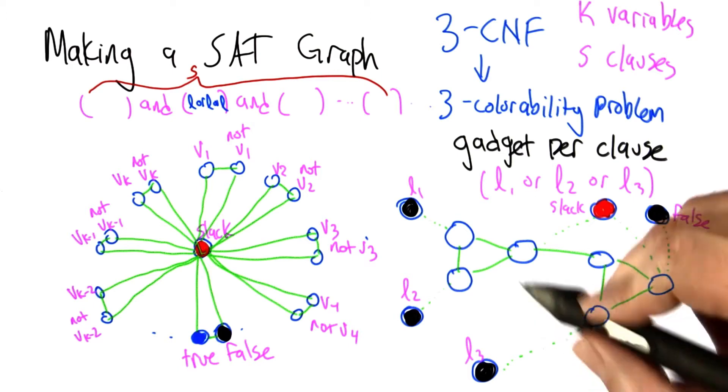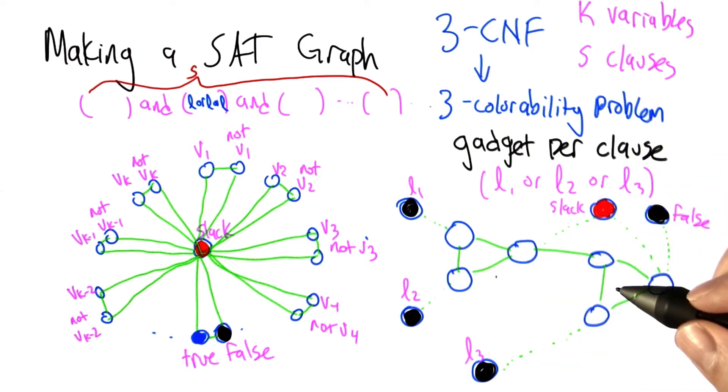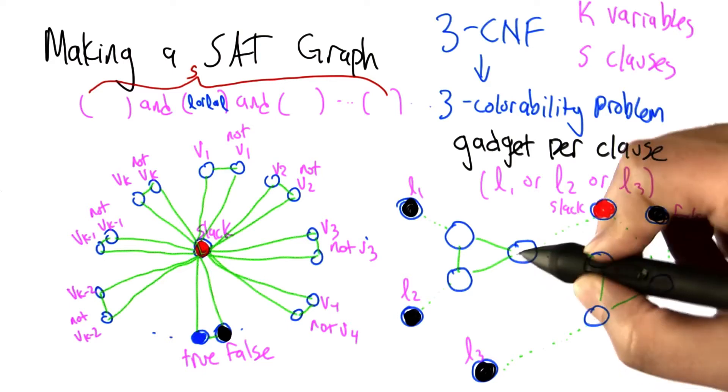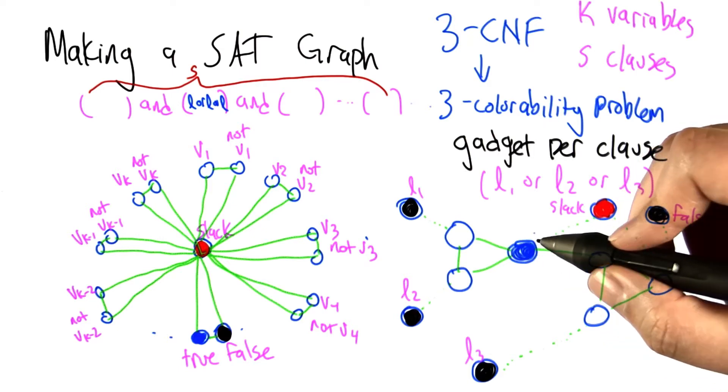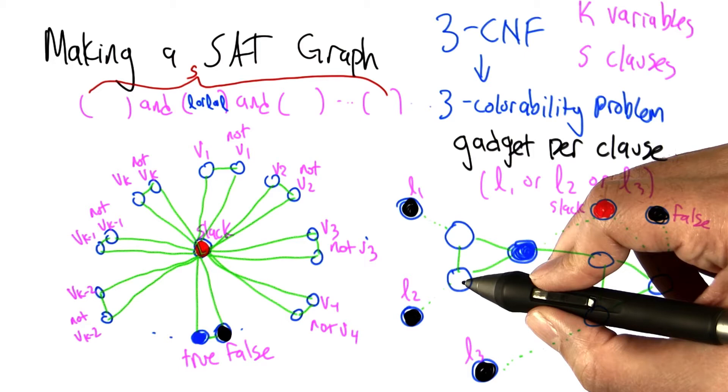So this is going to be important to make sure that this graph is not going to be colorable. So given that these two nodes are connected to slack, neither of them can be red. So this one in particular can either be blue or black. If this one is colored blue, then that means neither of these can be colored blue.